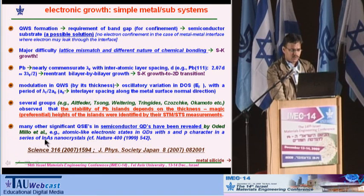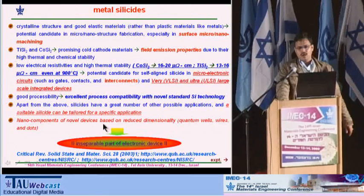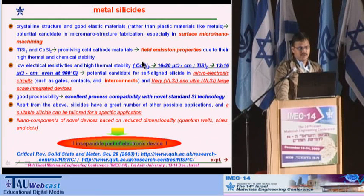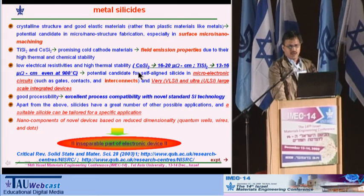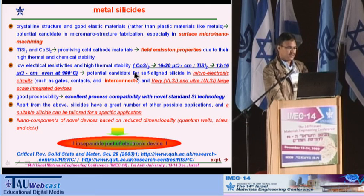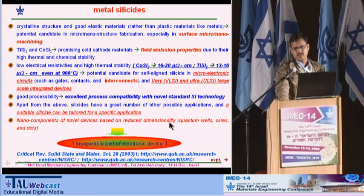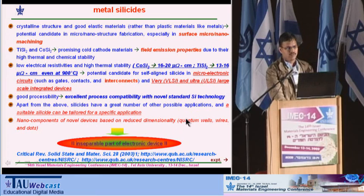In addition, many other significant studies have been done by the Odette Myler group in the past few years. Coming to metal silicides: they have crystalline structure, are good elastic materials, and are very useful in micro and nano machining. Titanium silicide and cobalt silicide show field emission properties and are useful in microelectronic circuits. They have good processability, which is why we are interested in nano-components of these silicides — like quantum wells, wires, and dots.